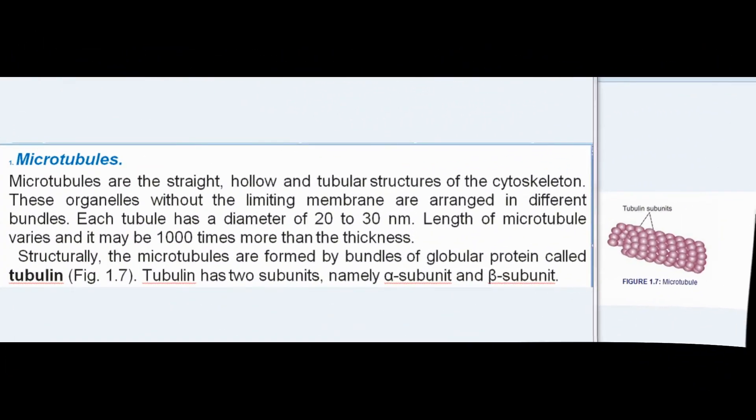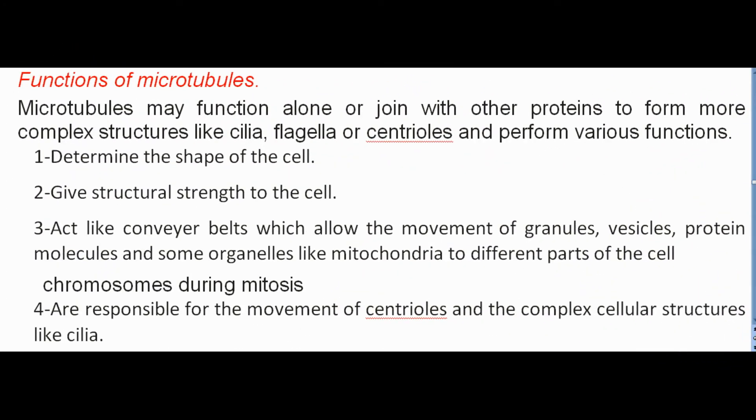Microtubules are straight, hollow, tubular structures of the cytoskeleton arranged in different bundles, each with a diameter of 20 to 30 nanometers. Length varies and may be 1000 times more than the thickness. Structurally, microtubules are formed by bundles of globular protein called tubulin, which has two subunits: alpha and beta. Microtubules may function alone or join with other proteins to form complex structures like cilia, flagella, or centrioles.